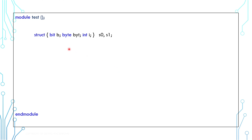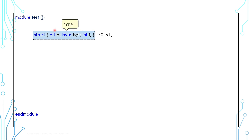A structure is an aggregate variable, meaning it can contain several other variables. We can declare a structure variable by using the keyword struct, and we wrap around the variables that we want in curly braces. In the example here, the structure has a bit, a byte, and an int. The first part is the type and the second part is the variable name.